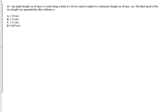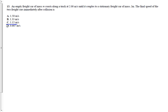Let's do question number 13 — submit that one as multiple choice number one. We got numbers all over the place with your answers. The only option people didn't pick was C, and some people even picked E. Question 13 says: an empty freight car of mass M coasting on a track at 2 meters per second until it couples to a stationary freight car of mass 2M. What is the final speed of the two freight cars immediately after the collision?